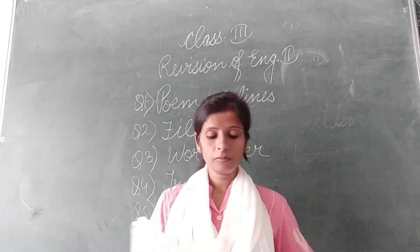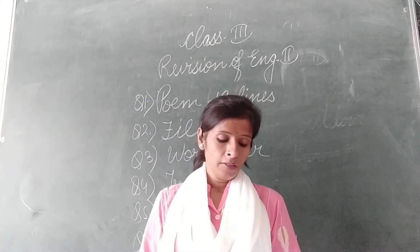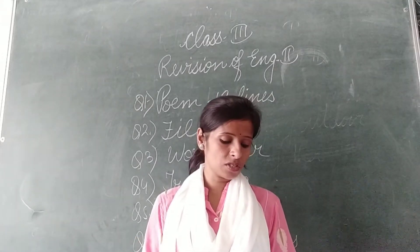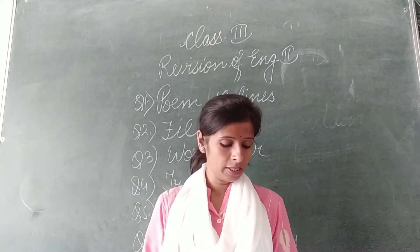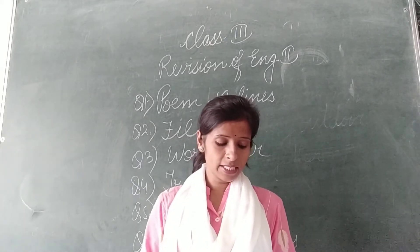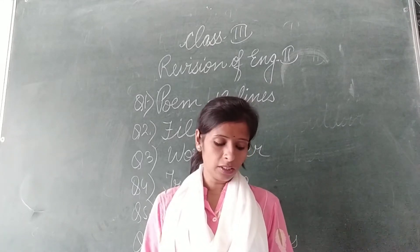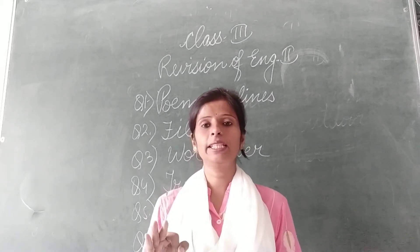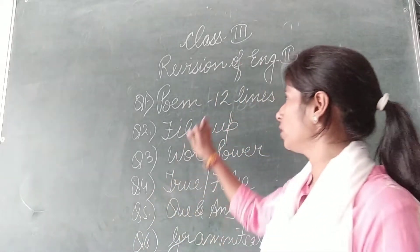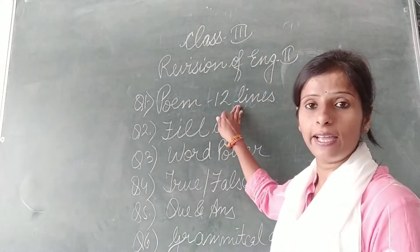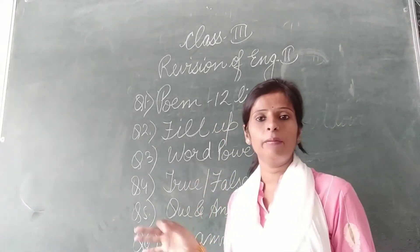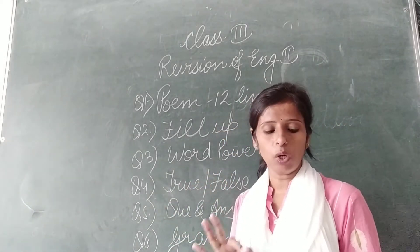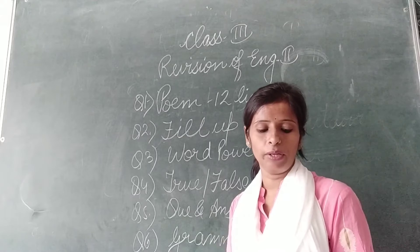So in that, first is 'Where Go the Boats' — a poem is there. Second is 'The Story of Flying Robots'. Third one is '20 Froggies'. In these 3 poems, first of all for poems, 12 lines I have given. In these 3 poems, any poem can come, so you have to learn all 3 poems.